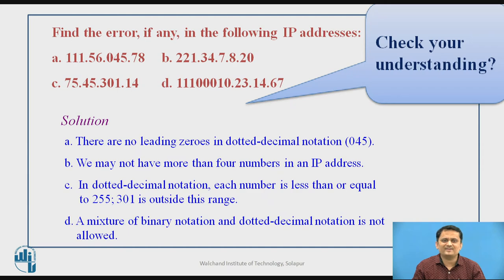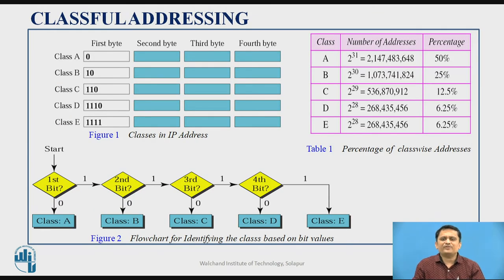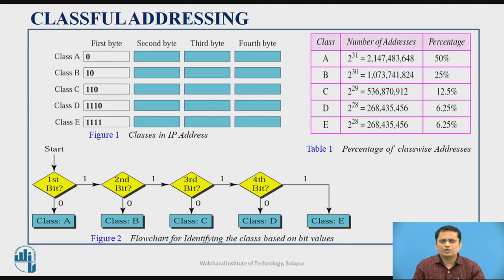When the IP address concept was started, designers thought there could be three different types of networks — very large, moderate, and very small. So the 32-bit IP address space was divided into four or five different classes. This is what we call classful IP addressing.